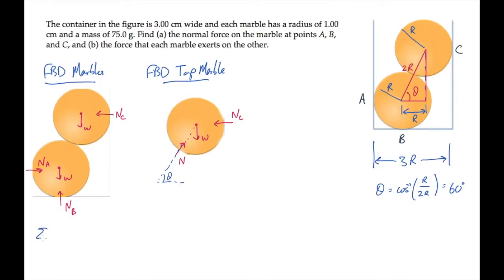Now let's come back to the free body diagram of both marbles and write out one condition of equilibrium, the sum of the forces in the vertical or y direction equaling zero. That gives us this expression, which tells us that the normal force at point B, the bottom of the container on the lower marble, equals twice the weight, which works out to 1.47 newtons. I'll record that result up here.